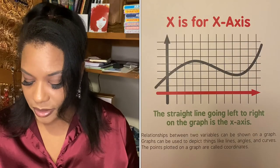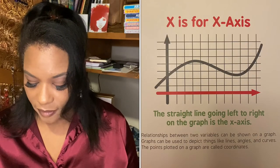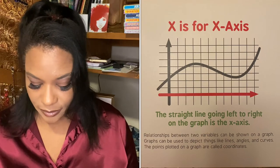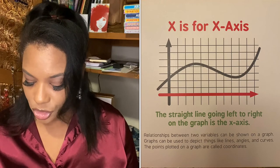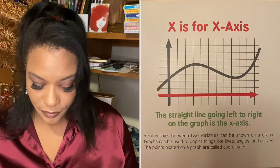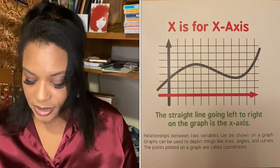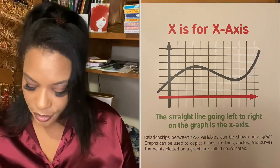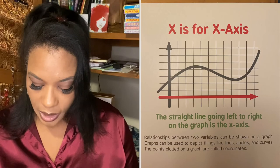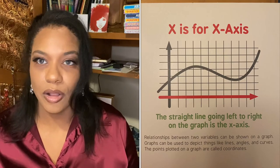X is for x-axis. The straight line going left to right on the graph is the x-axis. Relationships between two variables can be shown on a graph. Graphs can be used to depict things like lines, angles, and curves. The points plotted on a graph are called coordinates.